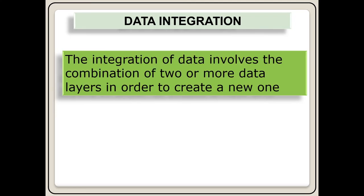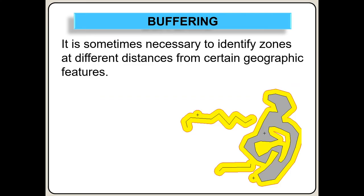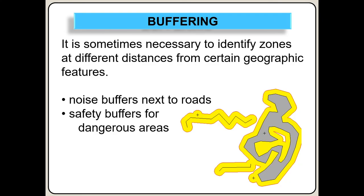When we look at data integration, it involves the combination of two or more data layers in order to create a new one. Buffering: in map work, you can be asked to identify a certain zone at a specified distance from a feature. You can be asked to create a noise buffer next to certain roads or safety buffers for dangerous areas. In paper 2, if you have a map with various silos, you can be asked to create a buffer zone around the silos and indicate how many farmers can make use of that specific silo.